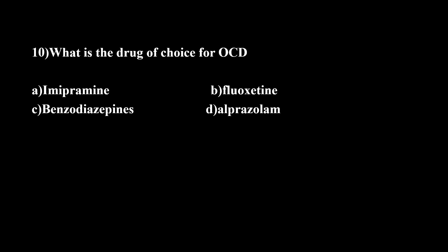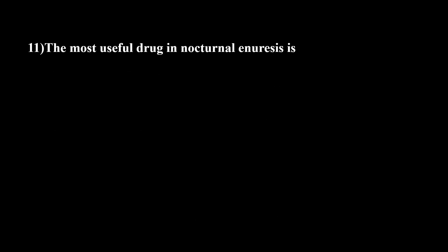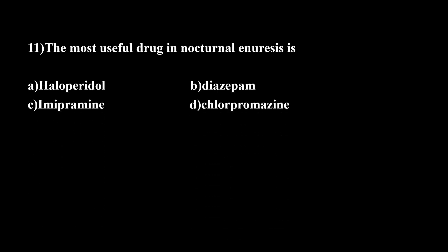Eleventh question: The most useful drug in nocturnal enuresis is? Options are: A. Haloperidol, B. Diazepam, C. Imipramine, D. Chlorpromazine. Imipramine is the drug used. There are actually two famous drugs for nocturnal enuresis treatment: Desmopressin (Vasopressin) and Imipramine.